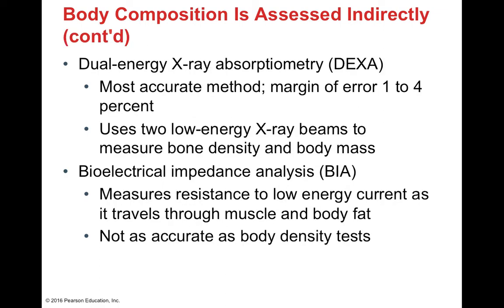We can also use DEXA, or Dual Energy X-ray Absorptiometry — the most accurate method — which does bone density scans using low energy X-ray beams to measure bone density as well as body mass. One of the most commonly seen methods is BIA, or Bioelectrical Impedance Analysis, where you stand barefoot on a scale and place your hands on sensors. It measures resistance to an electrical current as it travels from your feet to your hands through muscle and body fat, which have different electrical conductivity. It's not as accurate as body density tests, but much easier and therefore more frequently used.